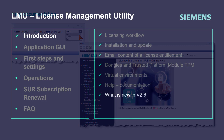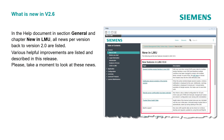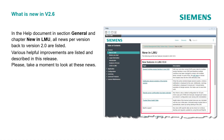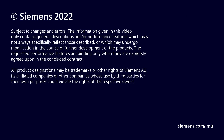We have reached the last chapter of the introduction: news in version 2.6. In the help document, under the section General and chapter New in LMU, all news per version back to version 2.0 are listed. Various helpful improvements are listed and described in this release. Please take a moment to look at these news items. Other updates are available via the link in the description.